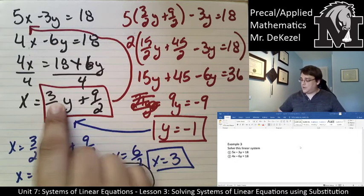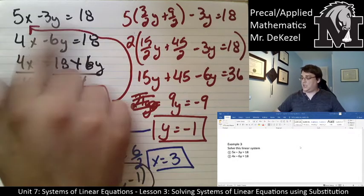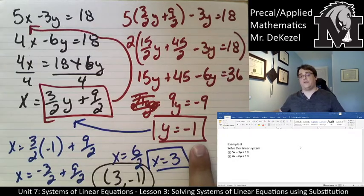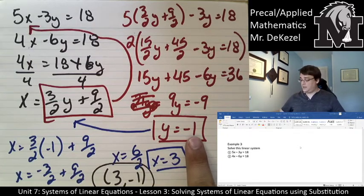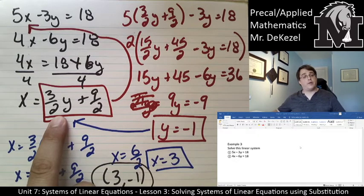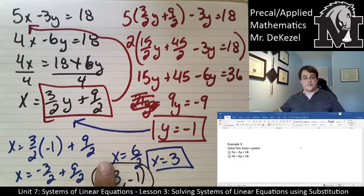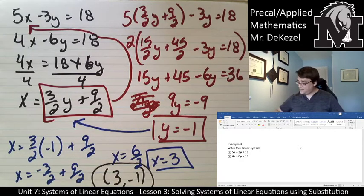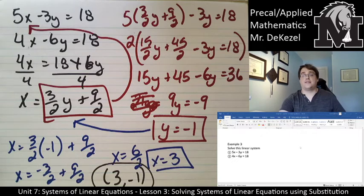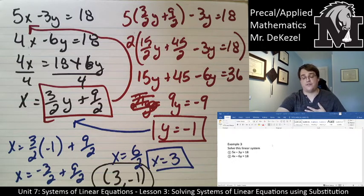We rearranged this equation, plugged it into here, did the math to find out that y is equal to negative 1. Then plugged y into this equation that was rearranged to solve for x. Found x was 3 and wrote our final solution here. So it is a little bit of work. I always find it less work than drawing a graph and finding out where they intersect and checking all that good stuff.